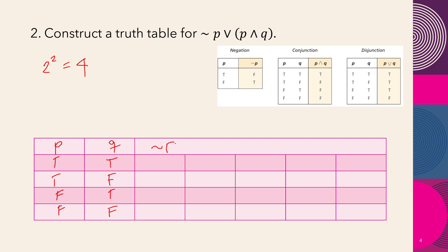We copy the compound statement: negation of p, disjunction of p, conjunction of q. First, we find the negation of p. Since p is T, T, F, F — the negation of p is: false, false, true, true.